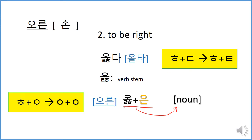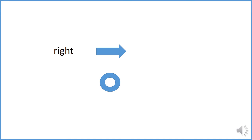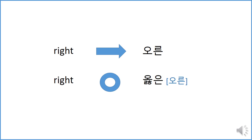So that was all for this video. Happy learning! Just kidding — here's one more screen. Right — to the right. Right — to be right. 오른 — to the right. 오른 — to be right.